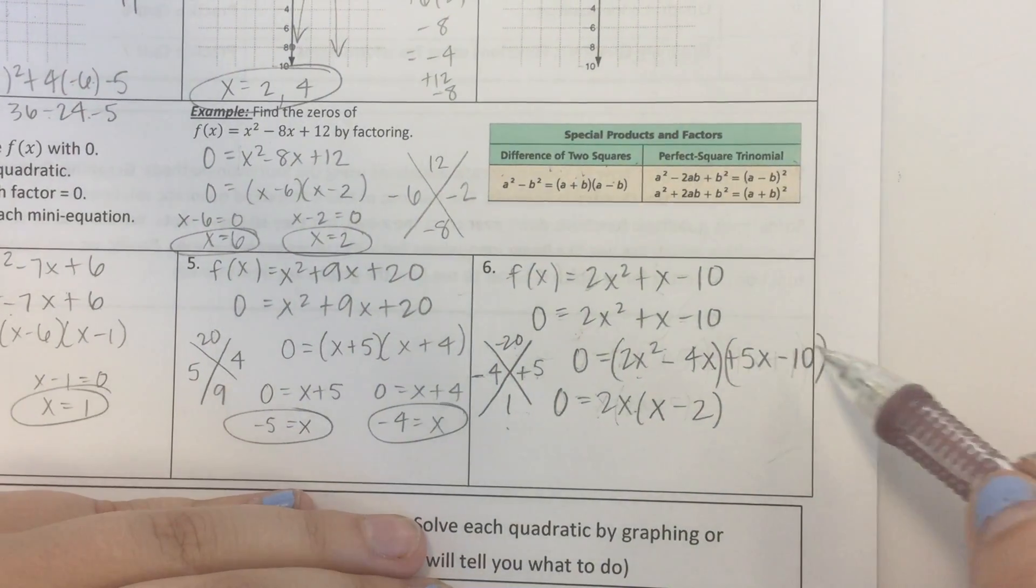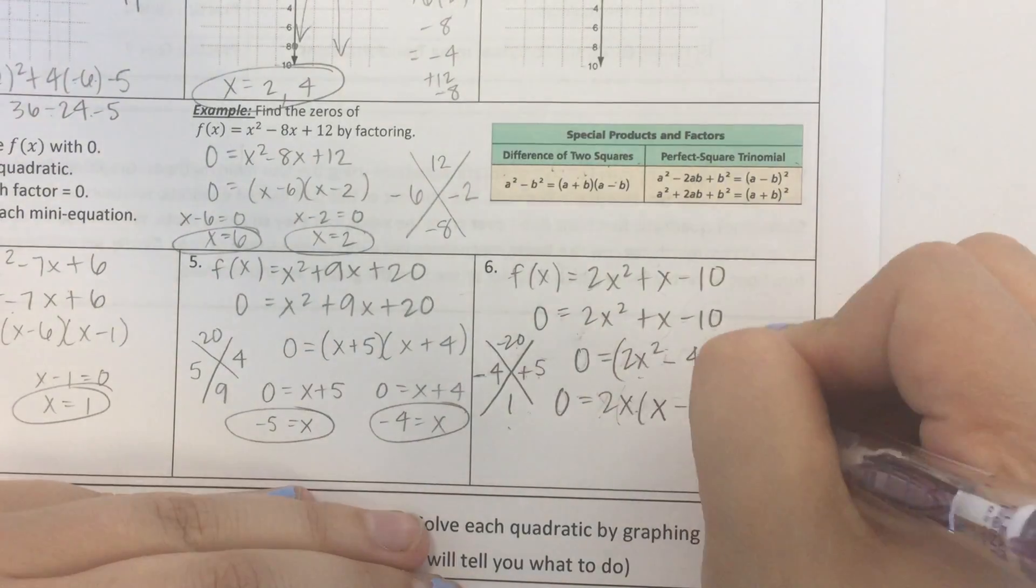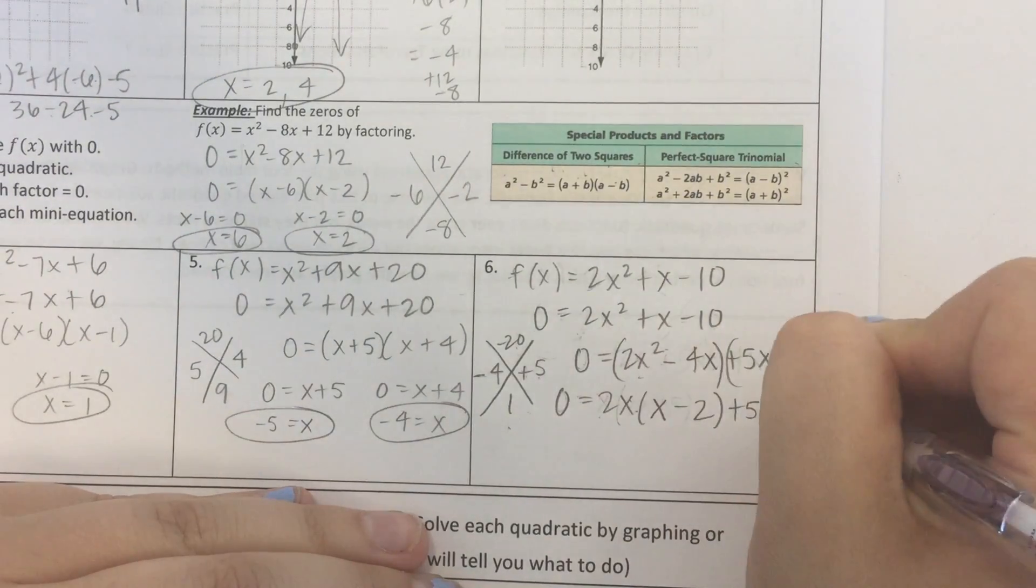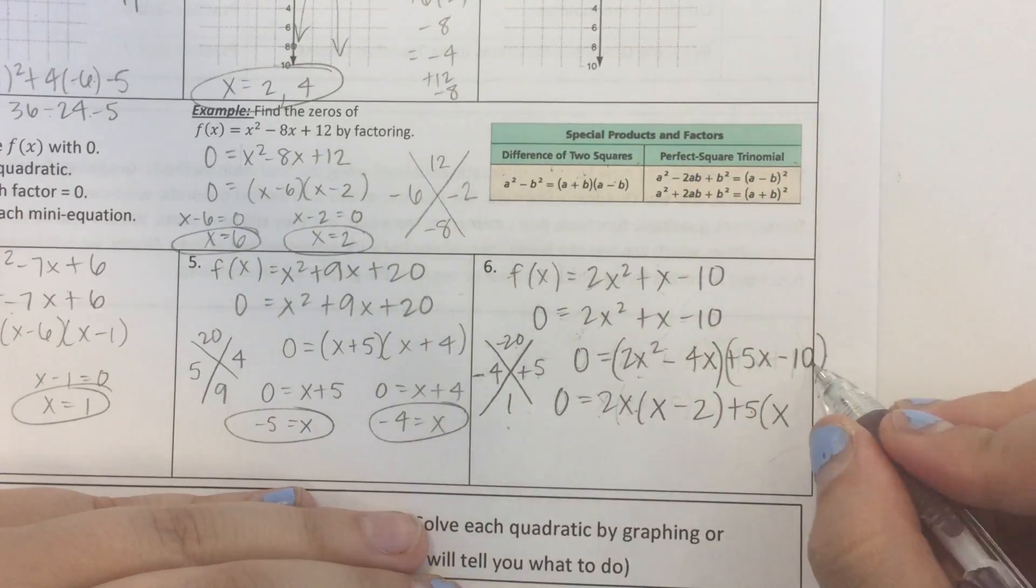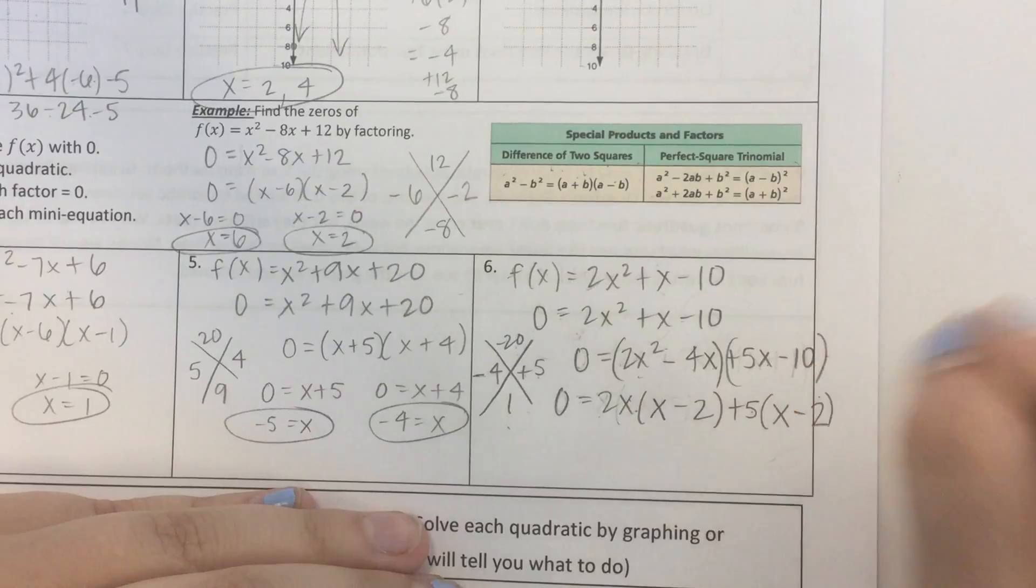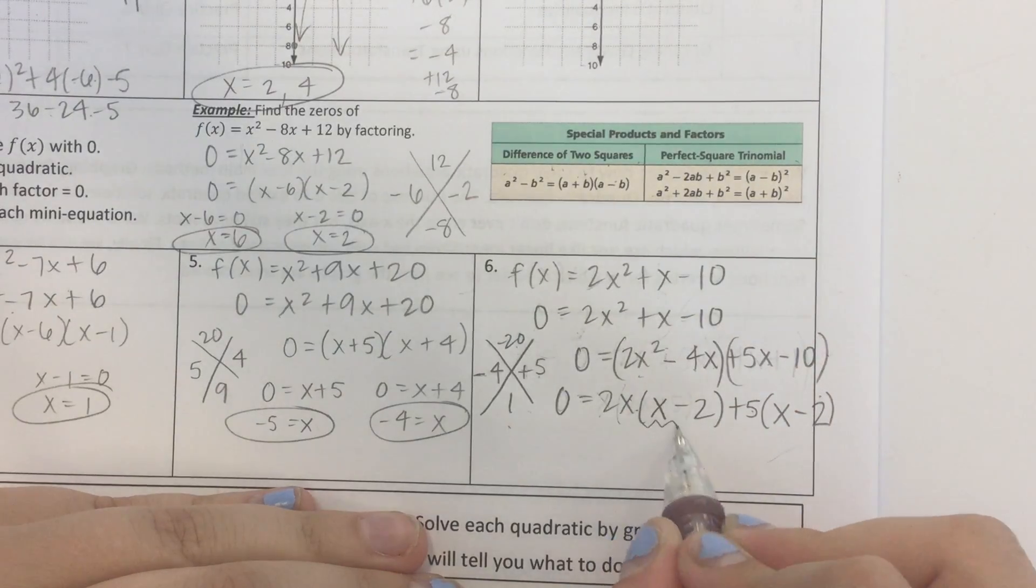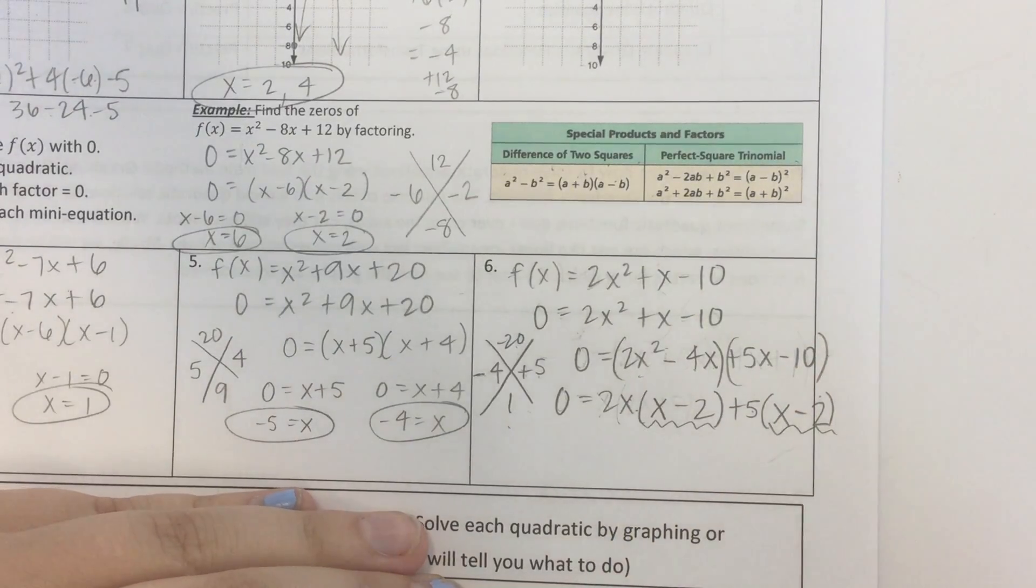We're going to do the same thing here. 5x minus 10. What do those two have in common? A 5. Now, 5x divided by 5 is just x. 10 divided by 5 is 2. This was our goal, to make this guy look the same as this guy.